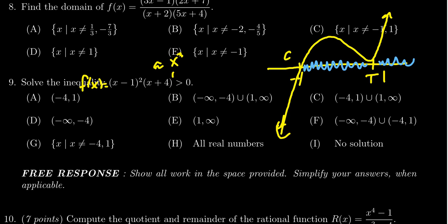f of x is not greater than 0 at negative 4 or at 1, because at those x-intercepts, f of x is equal to 0. So we see that the correct answer is going to be negative 4 to 1, union 1 to infinity. So the correct answer is C.